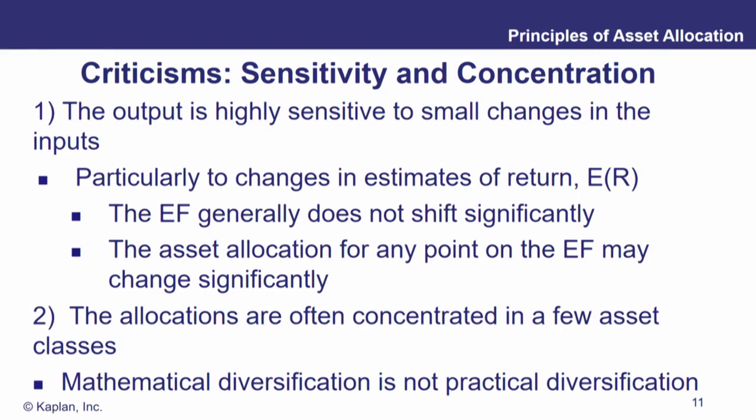Some other issues: the allocations are often concentrated in a few assets. If we looked at that prior example from the prior module, one of those corner portfolios had you put 100% of your money in real estate — not a penny, not a yen, not a euro into bonds or domestic stocks or non-domestic stocks. You put it all in real estate. And that's what the input data from that period of time told us to do.